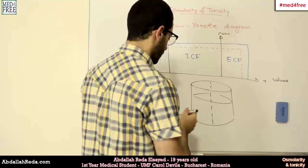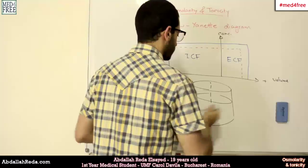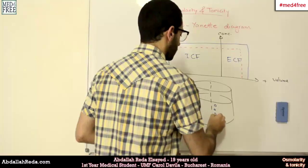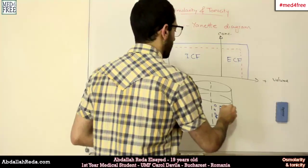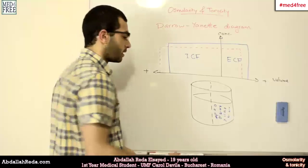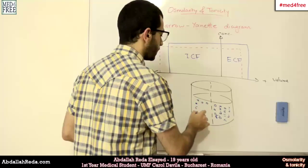This is the semi-permeable membrane, and we have our lots of particles here, lots of them. At the point of isotonicity, we will have the same number of particles here.